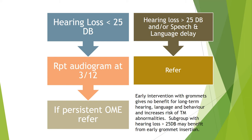Early intervention with grommets gives no benefit for long-term hearing, language, and behavior, and increases risk of tympanic membrane abnormalities. However, the subgroup with hearing loss of 25 decibels or more may benefit from early grommet insertion. To summarise: below 25 dB, repeat audiogram three-monthly up to 12 months; above 25 dB with speech and language delay, refer immediately.